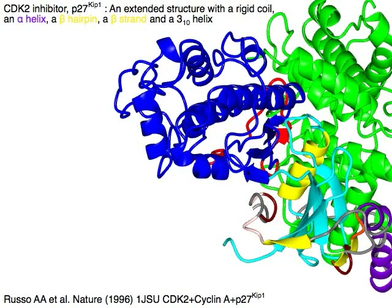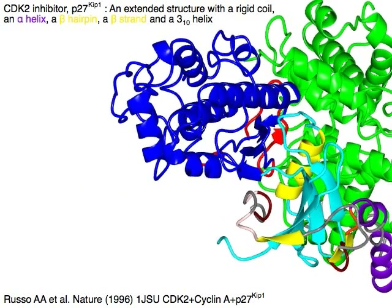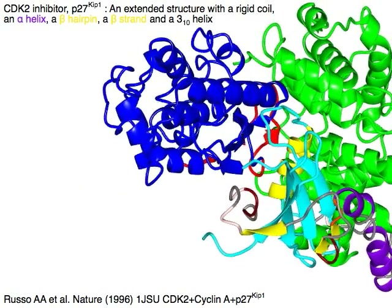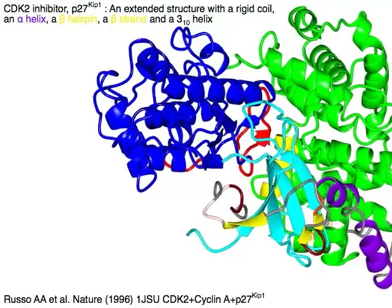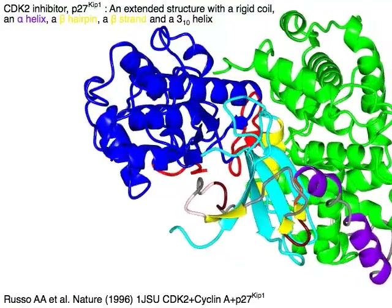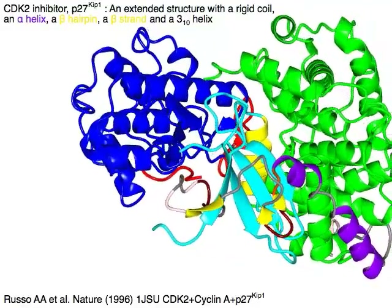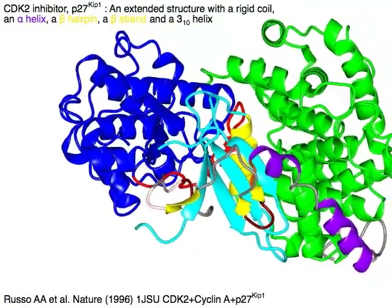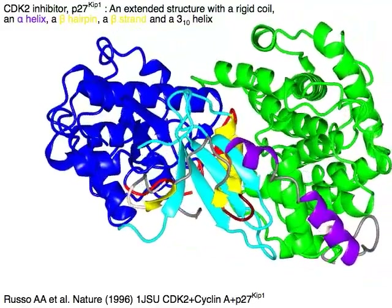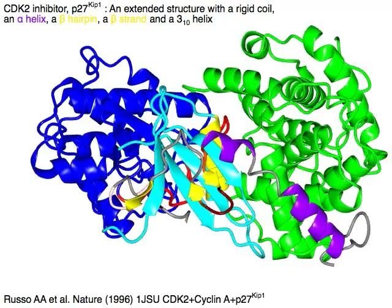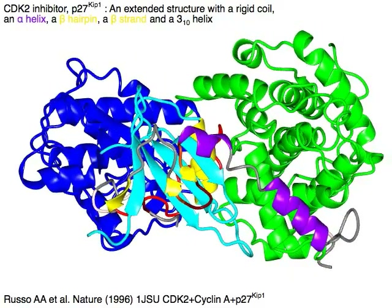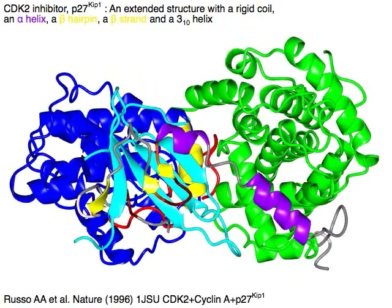CDK2 inhibitor P27-KIP1 has an extended structure with a rigid coil, an alpha helix in purple, a beta hairpin and a beta strand in yellow, and a 310 helix.